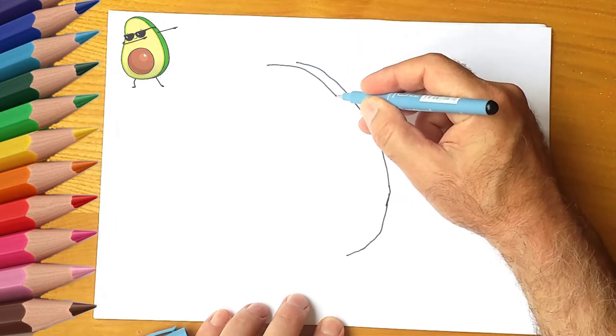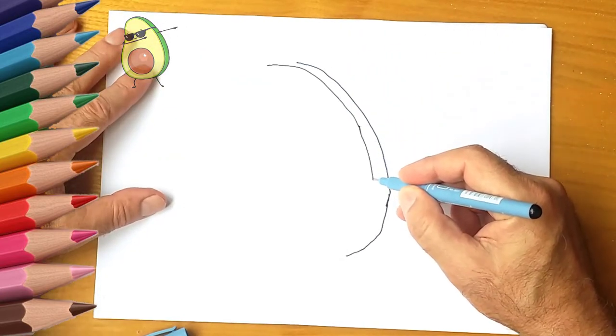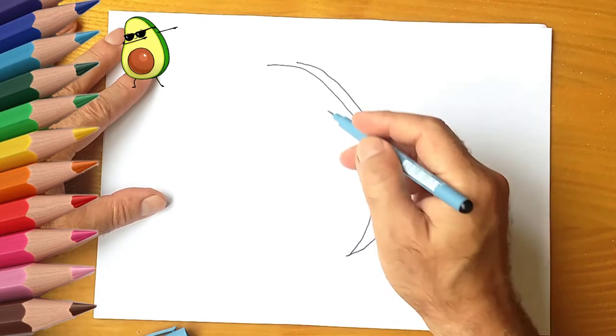First draw the outline of a whole avocado. It is a large oval, smaller at the top and large at the bottom.